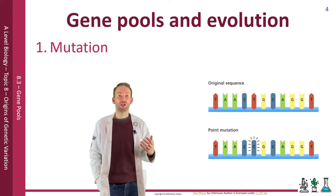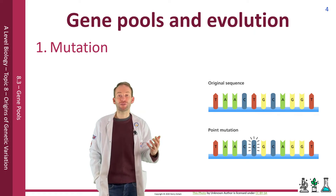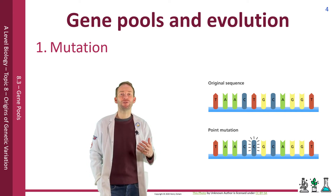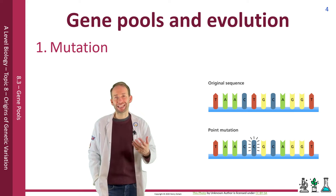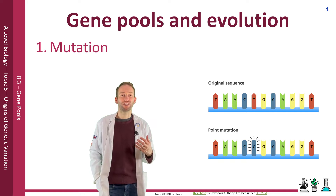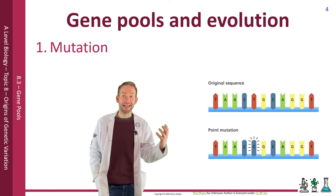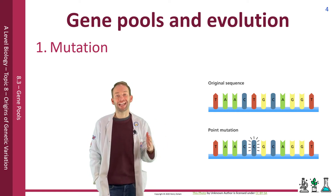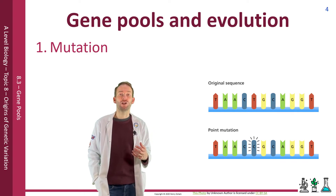Mutations are a source of new alleles in the population. Mutations are random changes in the DNA sequence. They do not happen that often as we have checking mechanisms in place, but there are so many cells that they are bound to occur at some stage. In animals, only mutations in the germline cells — those are eggs and sperm — will affect the alleles of the next generation. Mutations in somatic body cells will die with their owner.